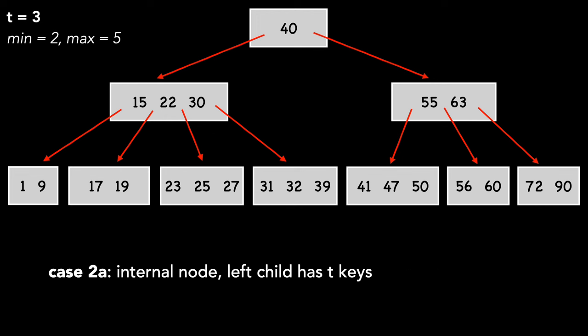Let's look at case 2a, where we have an internal node, and the left child has T keys, one more than the minimum. We'll show this by deleting 30. We delete 30's predecessor, 27, from the left child. We then move it up into the parent, removing 30 in the process.